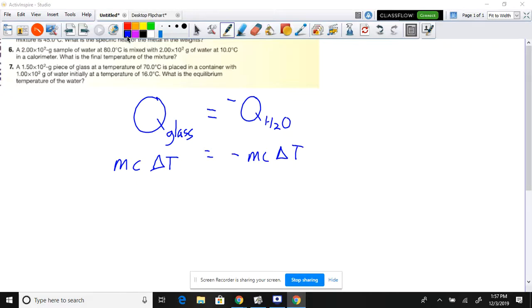1.5 times 10 squared. Well, that's 150 grams. So that's 0.15 kilograms of glass. Somebody right now go look at the heat capacity of glass. 840 joules per kilogram Kelvin. OK? And your temperature change. Well, what's your initial temperature? 70. So it's T2 minus 70. All right?